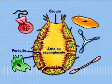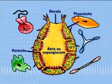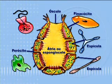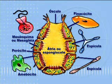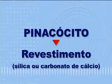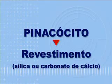Falando sobre a anatomia desse animal: de fora para dentro, temos os pinacocitos, que revestem; as espículas, que dão sustentação; os amebócitos, que preenchem o mesenquima — uma massa interna amorfa e gelatinosa; e mais internamente, revestindo o átrio, os coanócitos. Os pinacocitos são células achatadas com revestimento de sílica ou carbonato de cálcio, proporcionando proteção e sustentabilidade.